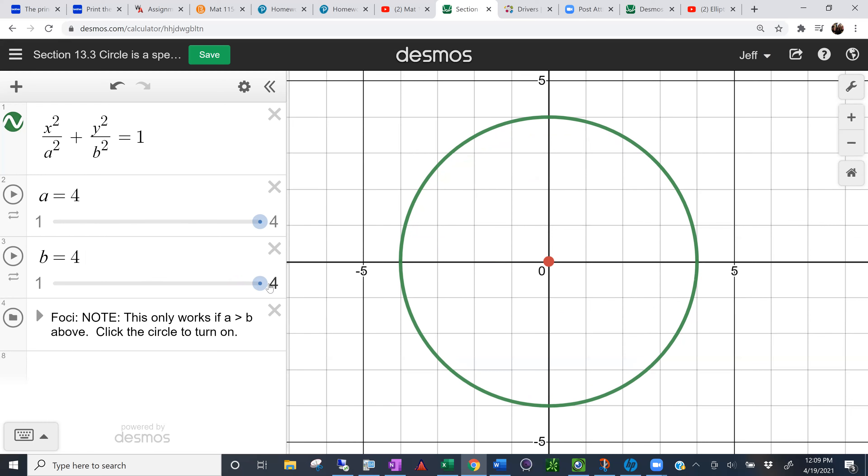But these foci have cool properties. And somebody actually built a pool table in an elliptical shape, which is pretty cool. So let me see if I can't find that link here. There we go.